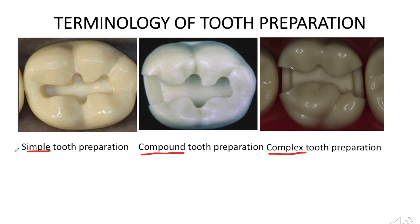In simple tooth preparation, only one tooth surface is involved. For example, in this photograph you can see only the occlusal surface of the tooth is involved, which makes it a simple tooth preparation.